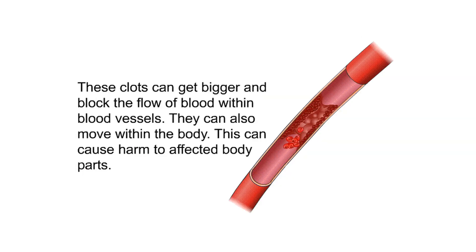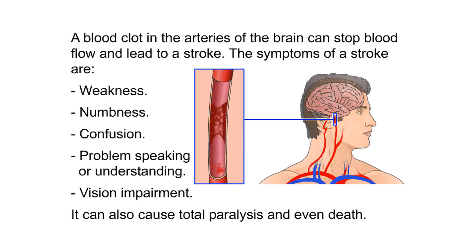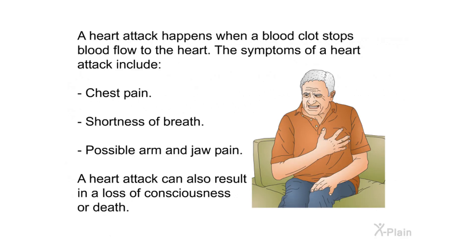These clots can get bigger and block the flow of blood within blood vessels, and can also move within the body, causing harm to affected body parts. A blood clot in the arteries of the brain can stop blood flow and lead to a stroke. Symptoms of a stroke include weakness, numbness, confusion, problems speaking or understanding, vision impairment, total paralysis, and even death. A heart attack happens when a blood clot stops blood flow to the heart, causing chest pain, shortness of breath, possible arm and jaw pain, loss of consciousness, or death.